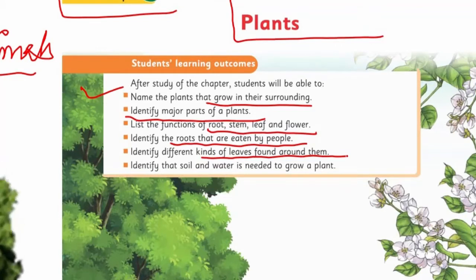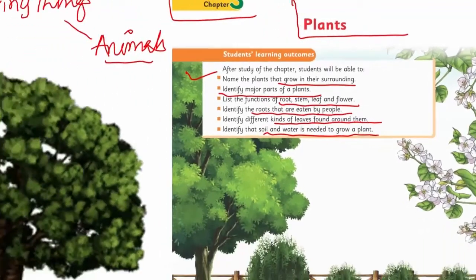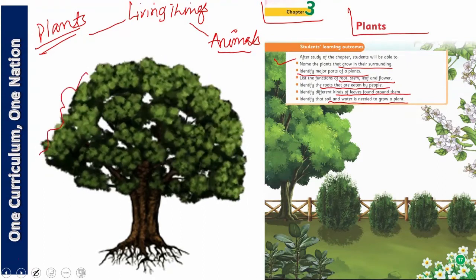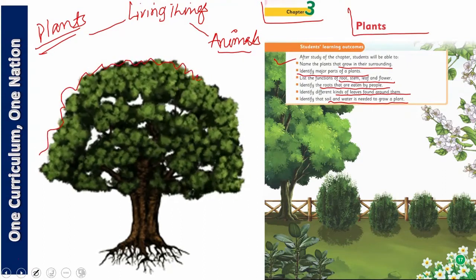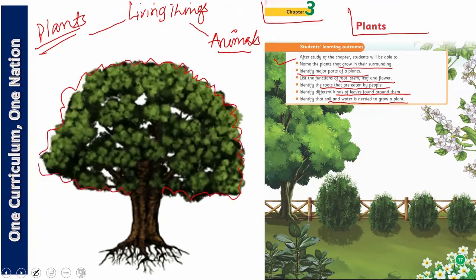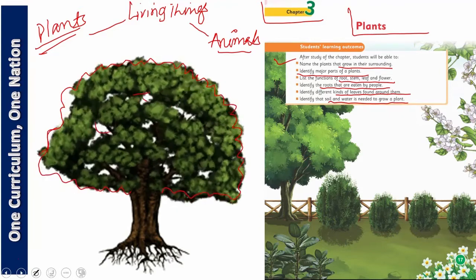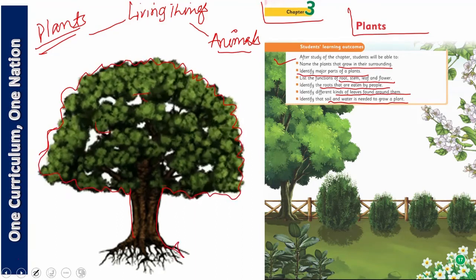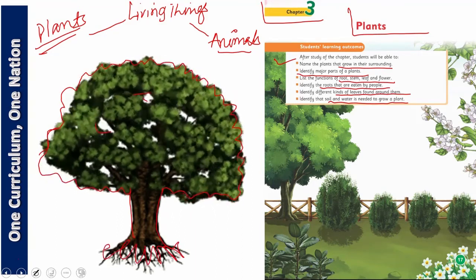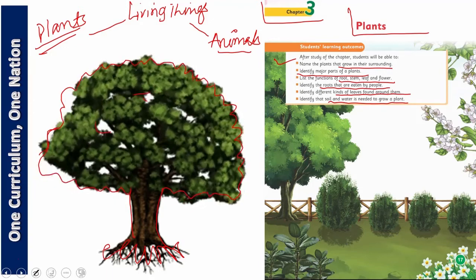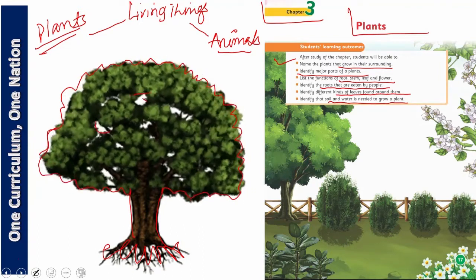And identify that soil and water is needed to grow a plant. Dear students, you see this tree? Trees are very beneficial for us. They keep our environment excellent, they give us oxygen, they give us shade, they give us fruits, they give us vegetables, and besides that there are countless benefits for our life.